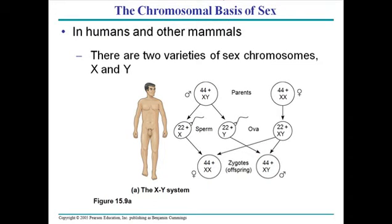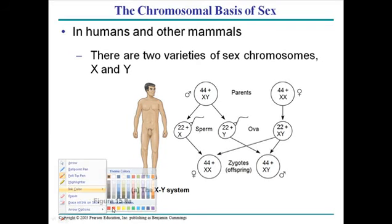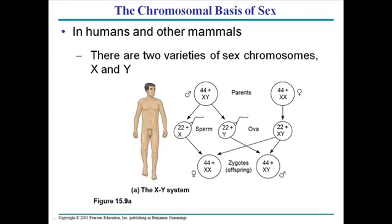Now let's talk about the chromosomal basis of sex. Morgan showed us that sex linkage and sex-linked inheritance occur, as we saw with Drosophila eye color. In mammals like humans, we have 44 autosomes and XY for males, 44 autosomes and XX for females. Sex chromosome inheritance is a little different from autosomal inheritance, because autosomal cases involve homozygous and heterozygous states.